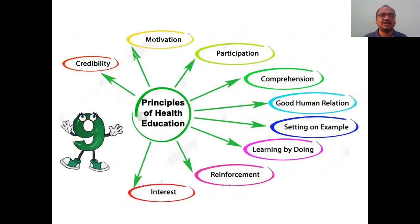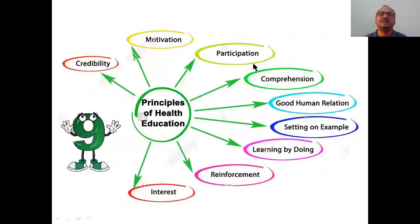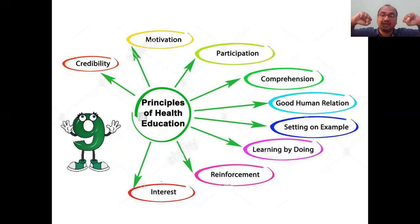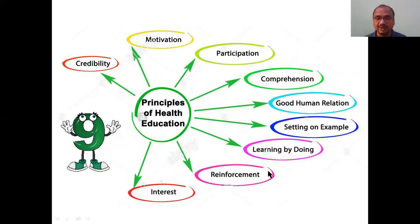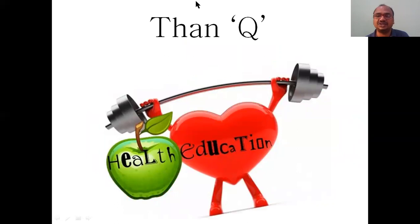Finally, the principles of health education — there are nine principles in total: credibility, motivating yourself, participation in health programs, being comprehensive, good human relationships — very important both at home and in companies — setting an example, learning by doing, reinforcement, and interest. All nine are called the principles of health education and must be written compulsorily in the examination. Both social education and health education are very important.